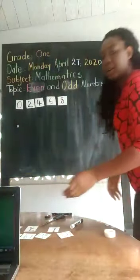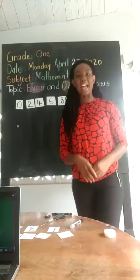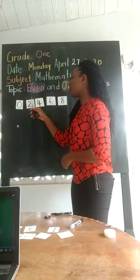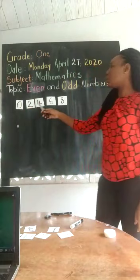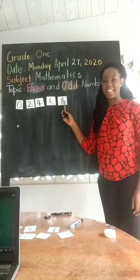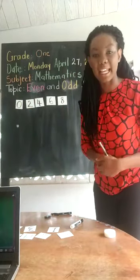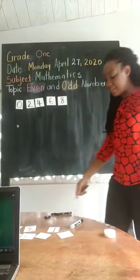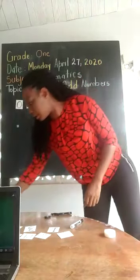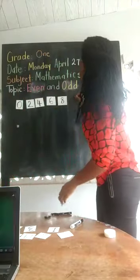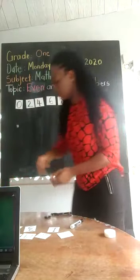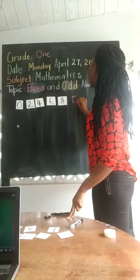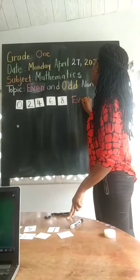Now that we've looked at the even and odd numbers video, the video said if numbers end with zero, two, four, six, or eight they are called even numbers. I'm going to write the name beside it — these numbers are even numbers.